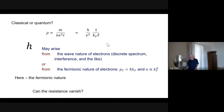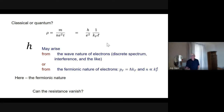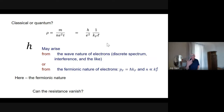We can take the Drude expression for resistivity — mass divided by density times electric charge squared times mean free time — and rewrite it in terms of h over e squared, Planck's constant divided by electric charge squared, times one over k_F L, where k_F is the Fermi momentum and L is the mean free path. This has h in it, so it looks quantum mechanical. But h may come from two different sources: one from the quantum mechanical nature of the electron as a wave, and the other from the fermionic nature of the electron.